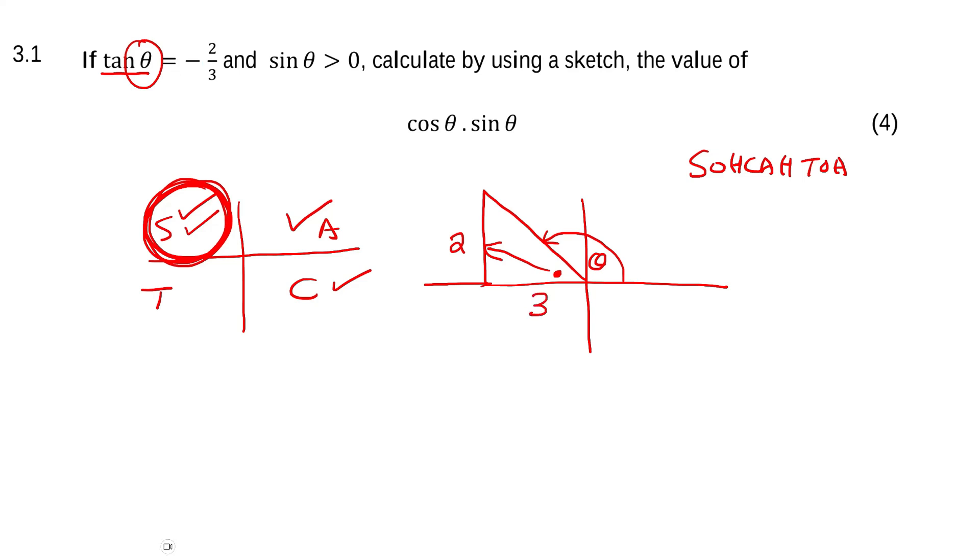Where does the negative come from? Good question. It's here because this is a negative x. The 2 is positive because that's a positive y.